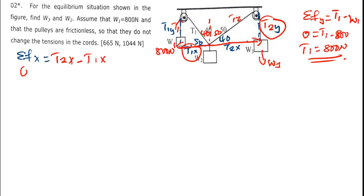So I'll say T2X minus T1X, replace this with zero. So this will be T2 cos theta minus T1 cos theta.